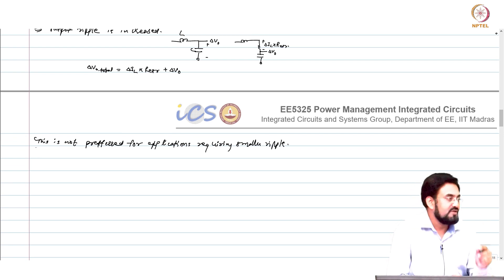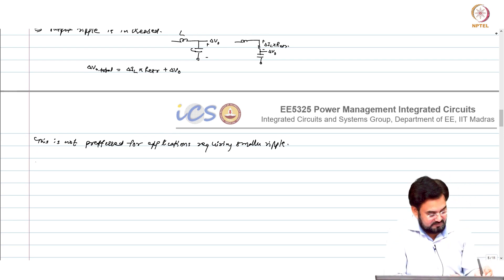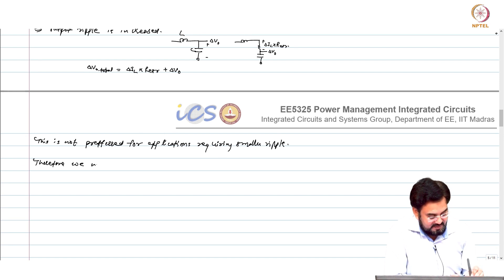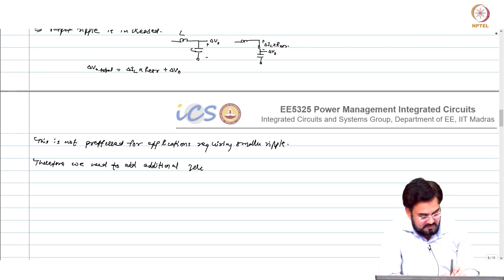What do we need to do? We need to have this zero introduced somewhere else, but not in the output capacitor. Therefore, we need to add an additional zero — I will call it a second zero.